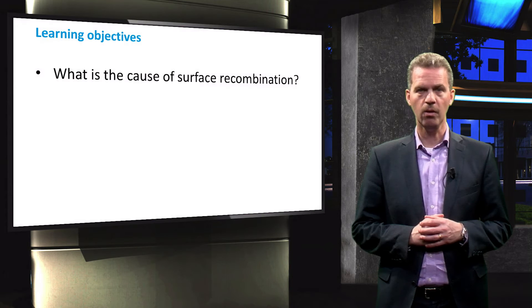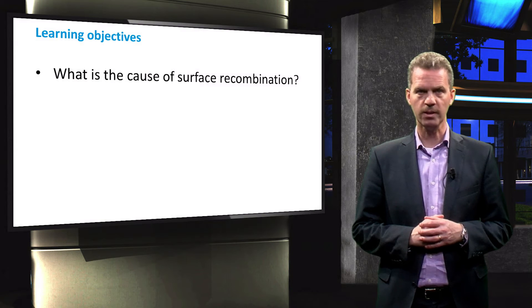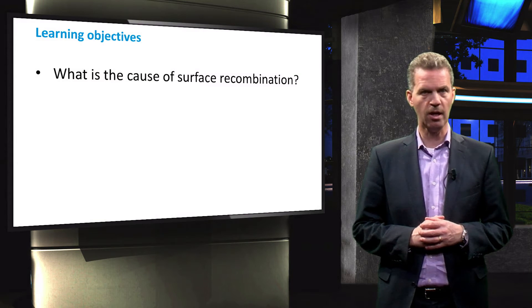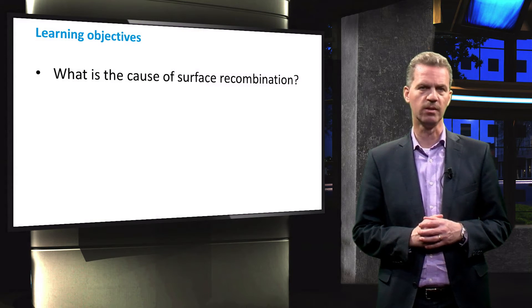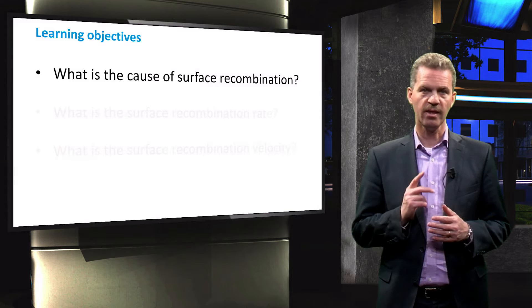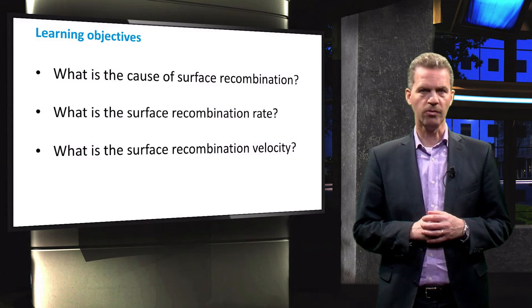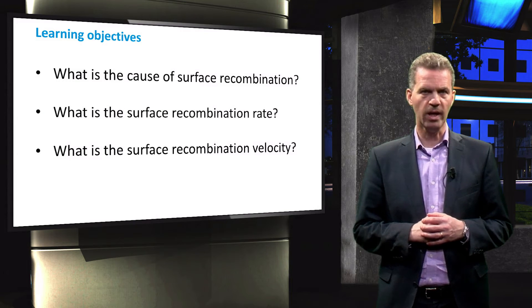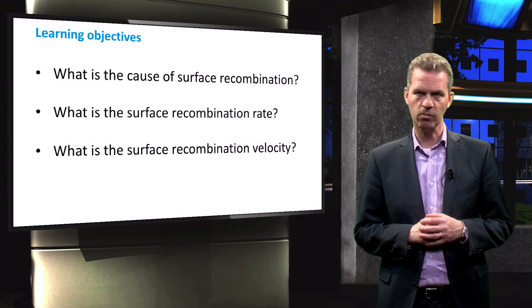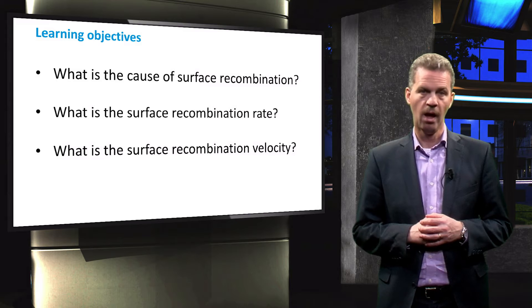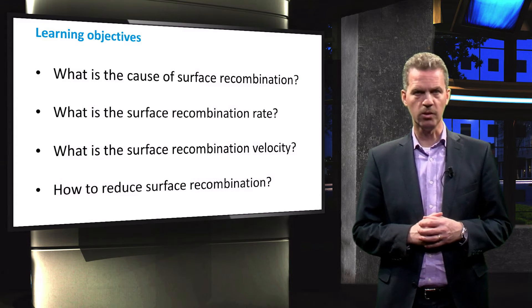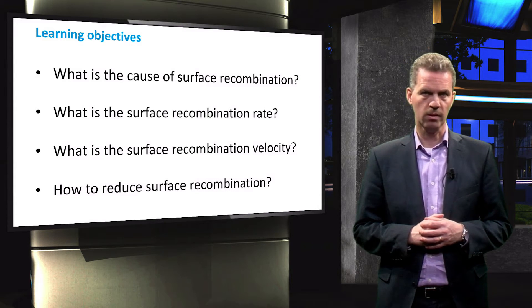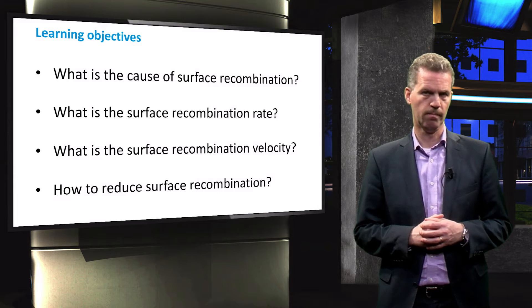In this video we will first discuss the underlying causes of surface recombination. Secondly, we elaborate on the recombination rate and surface recombination velocity. And finally, we will consider ways to reduce surface recombination.